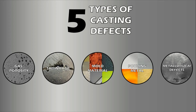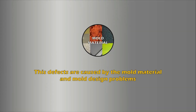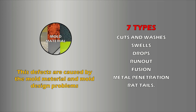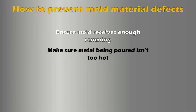The third main casting defect category is mold material defects. As suggested by the name, these are caused by the mold material, but they can also be caused by mold design problems. This makes up the largest category of casting defects, with seven basic types: cuts and washes, swells, drops, run out, fusion, metal penetration, and rat tails. To prevent mold material defects, ensure molds receive enough ramming to hold the molten metal, and make sure the metal being poured isn't too hot.